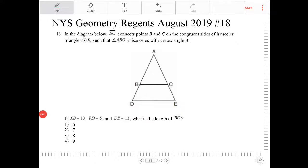In the diagram below, BC connects points B and C on the congruent sides of isosceles triangle ADE, such that triangle ABC is isosceles with vertex angle A.